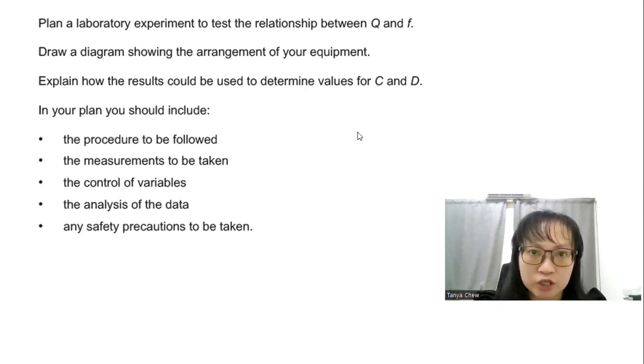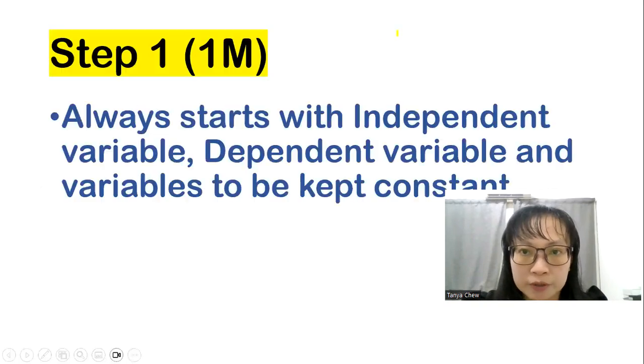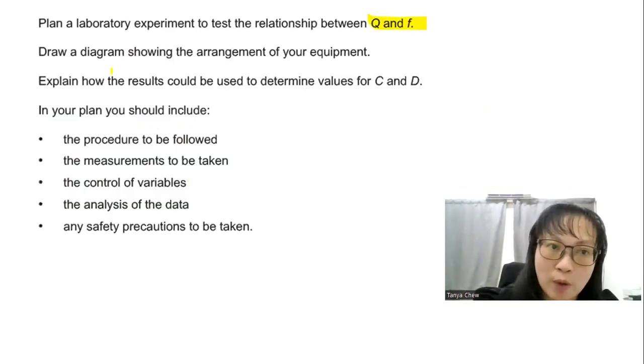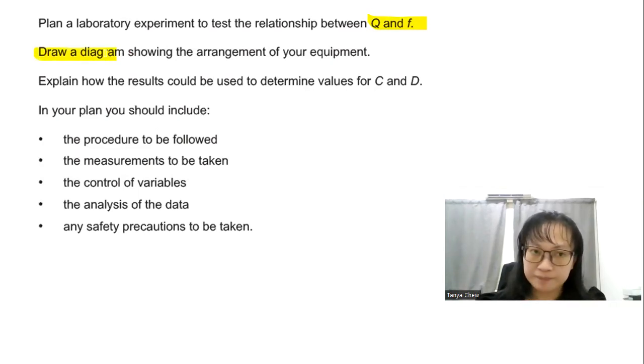So you have to plan a laboratory experiment to test the relationship between Q and F. This is super duper important. Q and F. You have to draw a diagram showing the arrangement of your equipment apparatus and you have to explain how the results could be used to determine the values for C and D. At the end of the time, you have to determine the values for your C and your D. And in your plan, they have already told you what they want. So you have to include the procedure or the method to be followed, all the measurements that you have taken and the control variables, the analysis of the data, and any safety precautions to be taken. So all these will give you a total of 15 marks.